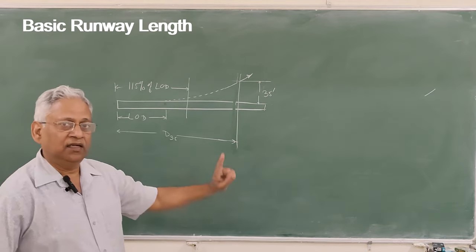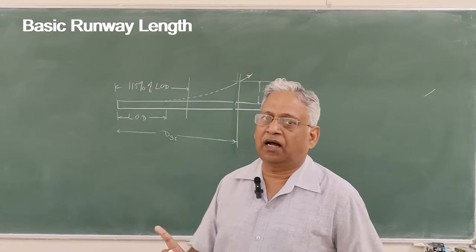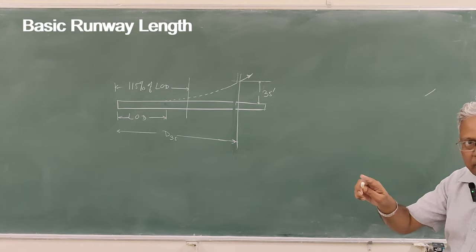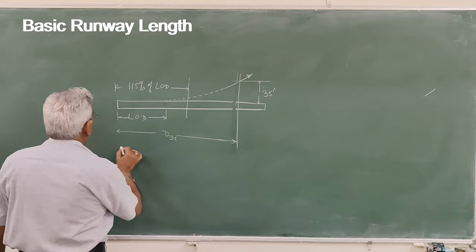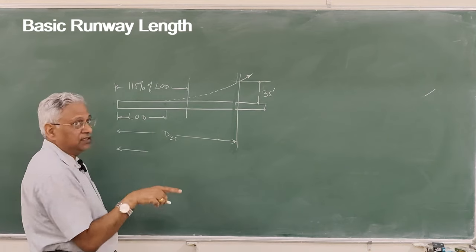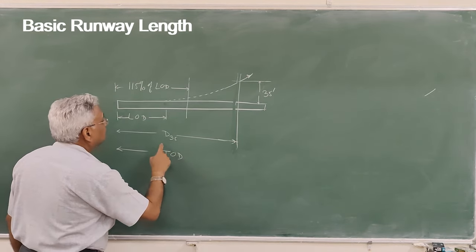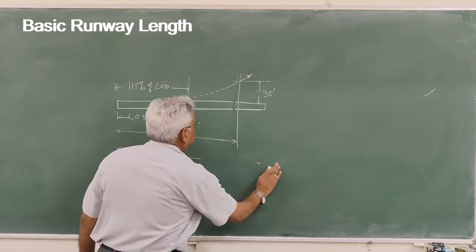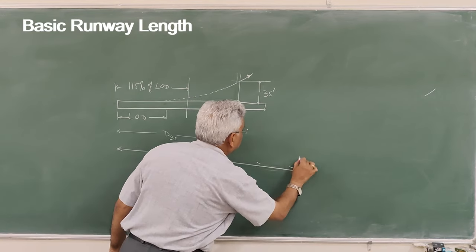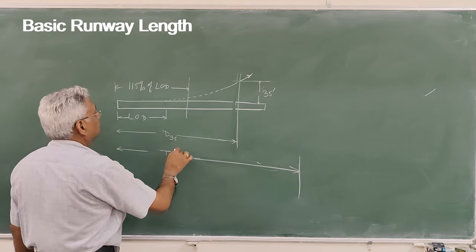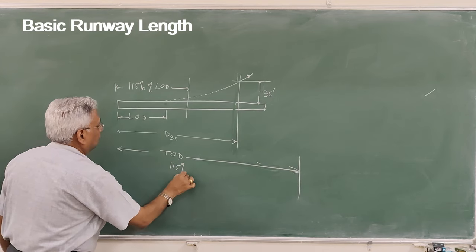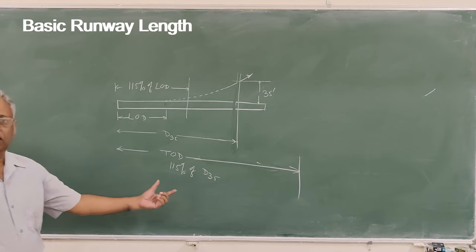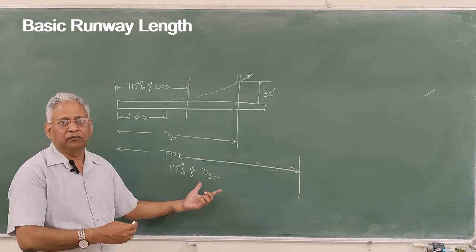Distance to D35 is generally fixed for an aircraft. Considering the variability among pilots, the total takeoff distance, which we call TOD, is 115% of D35. So you can say D35, or D10.7, or sometimes 10.5 meters.